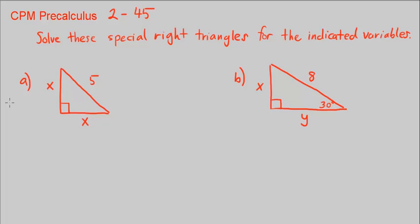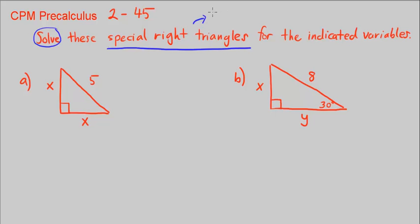This is CPM Pre-Calculus Chapter 2, Number 45. Solve these special right triangles for the indicated variables. When asked to solve a triangle, I need to find all three sides and all three angle measures. There are two special right triangles: a 45-45-90 degree triangle and a 30-60-90 degree triangle.